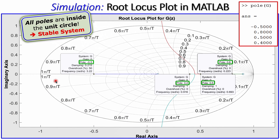In conclusion, all poles are inside the unit circle, confirming the system is stable. We have verified this fourth order discrete time system using the Jury stability test, by running MATLAB, generating the unit step response, and graphically showing the poles in the root locus plot. If you have any questions or comments, please let me know and I will try to answer them as soon as possible. See you next time.